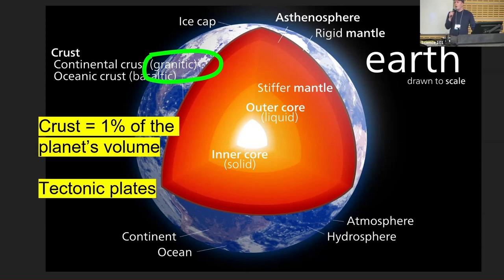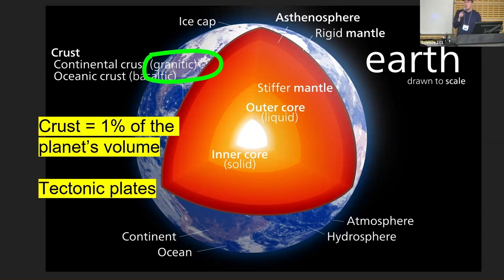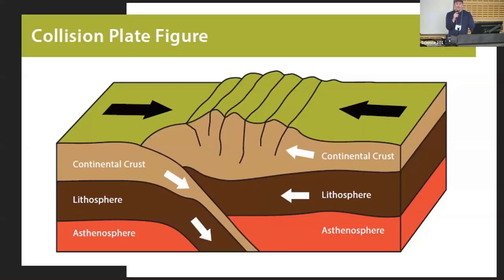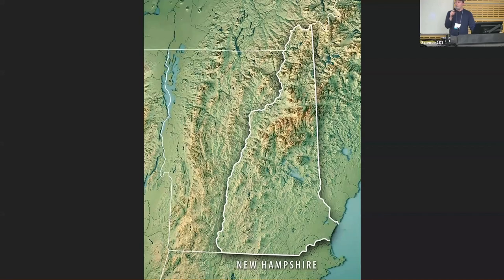Of course, the crust isn't one continuous piece — it's tectonic plates. Tectonic comes from the Greek word for structure, carpentry. These are plates moving over the mantle, which is solid but over the long haul can behave like a liquid. When those plates crash, they crumple — and we call those crumples mountains. Now we're getting closer to home.